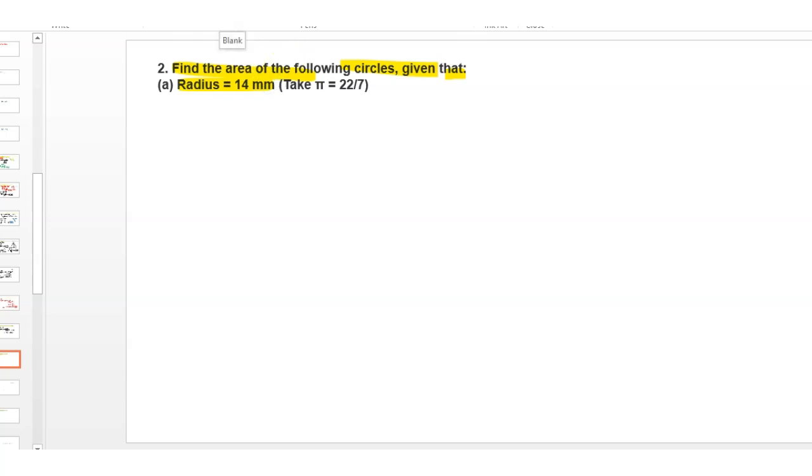equals 22 divided by 7. So first, we write here: radius equals 14 mm, and we have to find the area of the circle.